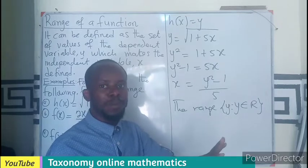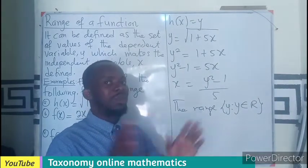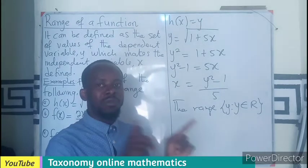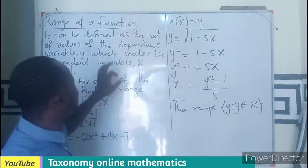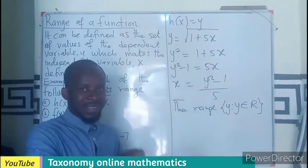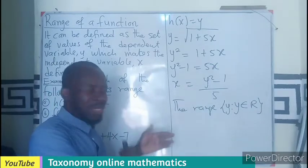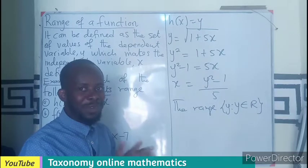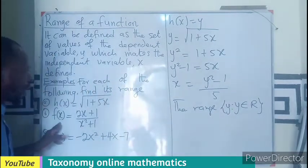This is a little different from finding a domain — for a domain there is no change of subject; we just find the values of x that make the expression defined. But in finding the range, we first make x the subject, then find the values of y that will make the expression of x defined. I believe you get the point. Good — so that's the first example.